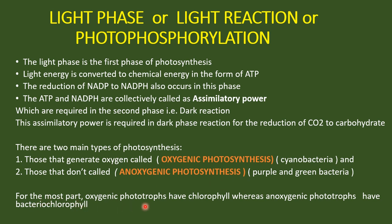For the most part, oxygenic phototrophs have chlorophyll whereas anoxygenic phototrophs have bacterial chlorophyll. Oxygenic phototrophs, meaning those which perform oxygenic release of oxygen during photosynthesis, all have chlorophyll as a pigment — example is cyanobacteria. Anoxygenic phototrophs, such as purple and green bacteria, possess bacteriochlorophyll.